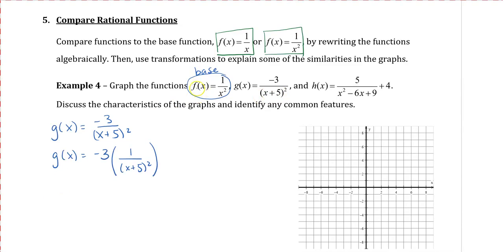Based on this, g(x) equals negative 3 times f(x), but not just f(x) — because that would give negative 3 times 1/x². We actually want x+5 in the denominator. So it's going to be negative 3 times f(x+5). This function notation states that we take x+5 and substitute it into the x in the x², and that's how we get the denominator.